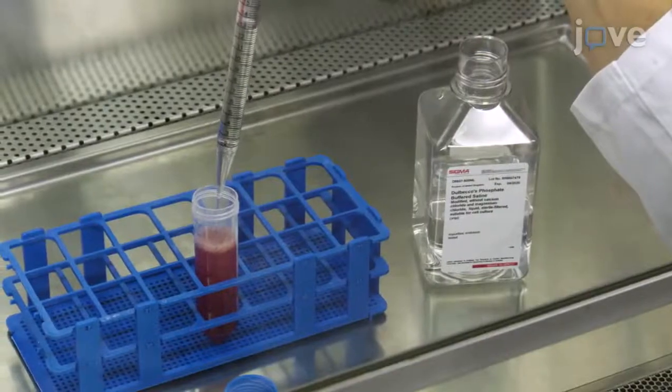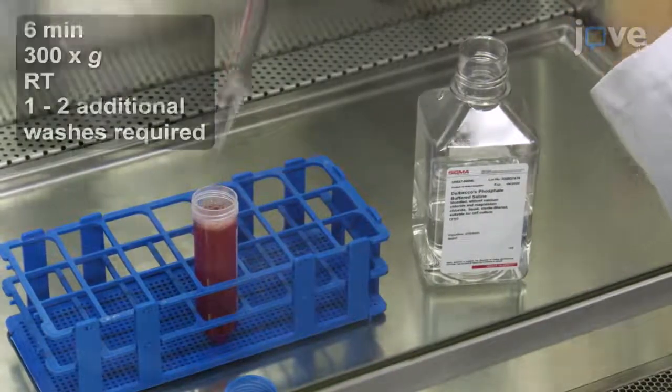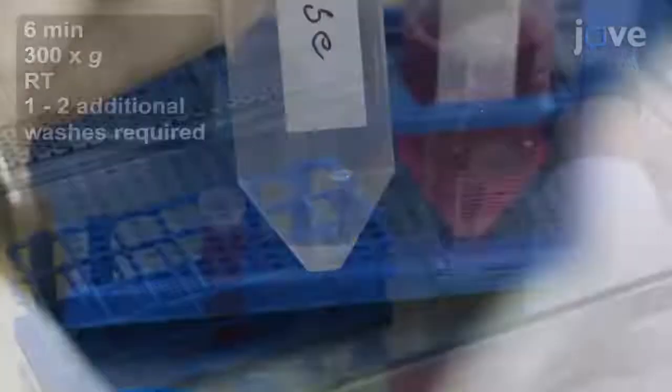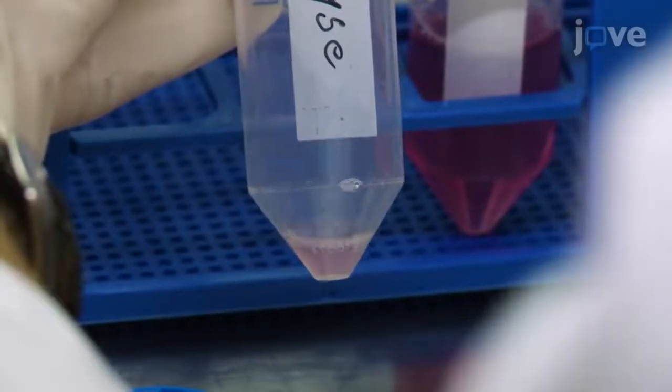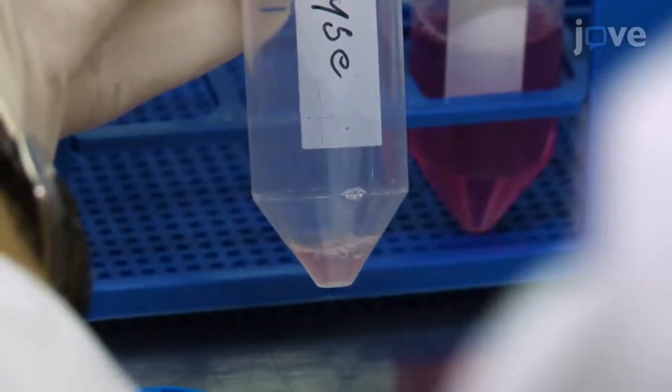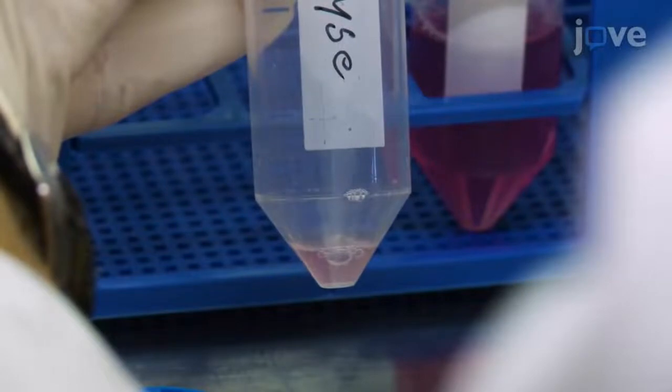After 8 minutes at room temperature, fill the tube with PBS for a centrifugation wash, and resuspend the pellet in 2 milliliters of culture medium for a 60-minute incubation at 37 degrees Celsius.